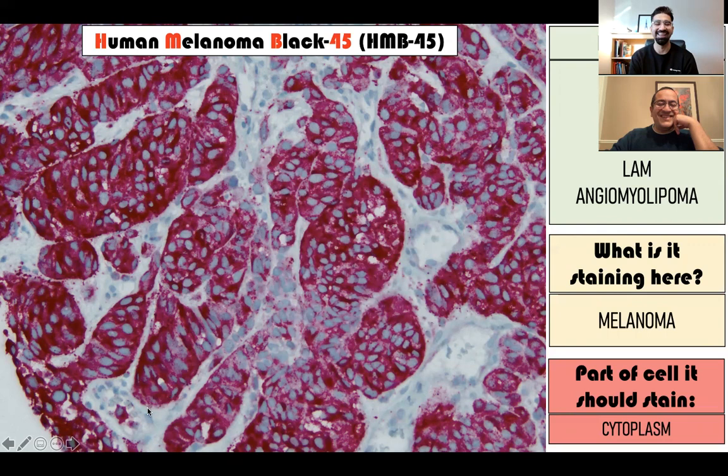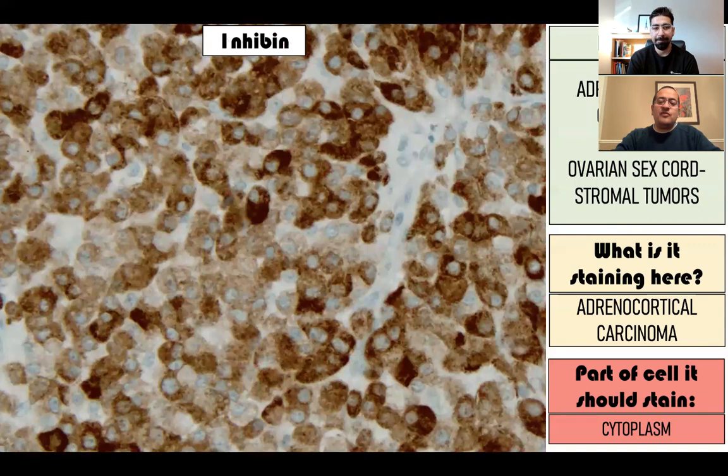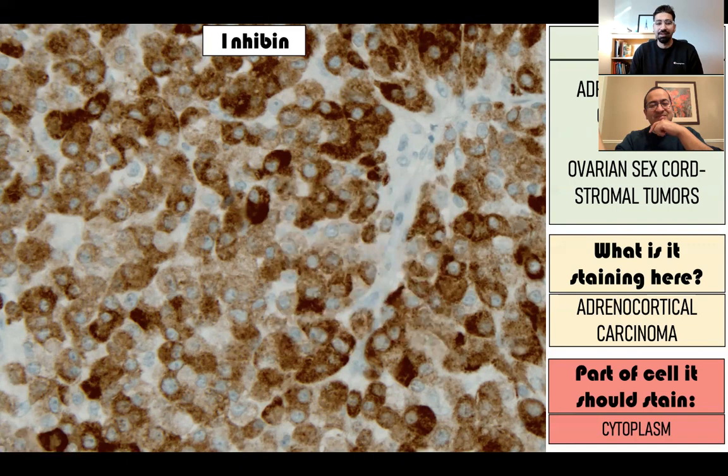Inhibin is a great cytoplasmic marker for adrenocortical tumors and sex cord stromal tumors. So SF1 is the nuclear marker of these tumors and inhibin is the cytoplasmic marker. You could use either one for these tumors.